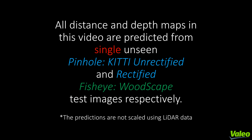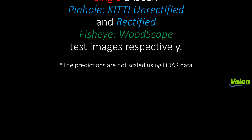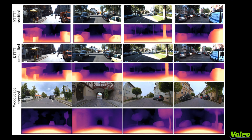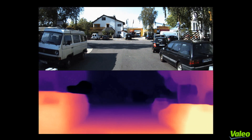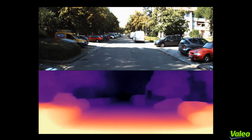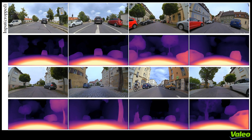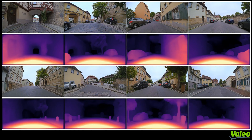Let us see some qualitative results from our model on KITTI unrectified, rectified, and fisheye WoodScape test sequences respectively. In this figure, we can see the qualitative comparison on all three datasets. The first row indicates the KITTI rectified, followed by the KITTI unrectified, and finally the WoodScape dataset. We also showcase results on the fisheye WoodScape dataset where our model produces sharp distance estimates and incorporates the distortion introduced by fisheye images, which can be seen in the top left and right images due to the strong usage of sub-pixel convolution.